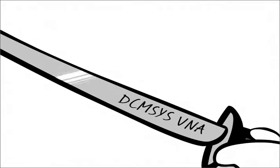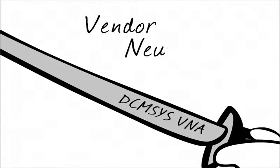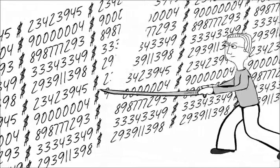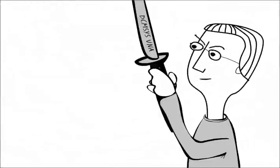The implementation of DCMSYS VNA, or Vendor Neutral Archive, cuts out all of your costs beyond the cost of archiving the data, including data sharing.